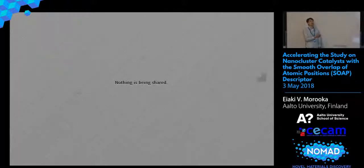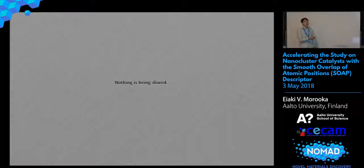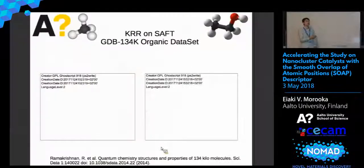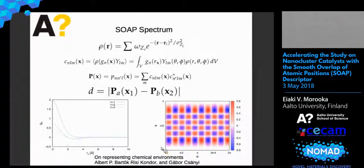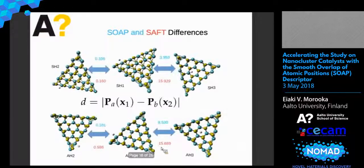We switched to SOAP. It's a very similar procedure. First, we take the Gaussian smearing for each atom. And then we integrate it over the spherical harmonics with a basis function, which could be anything orthonormal. If we take the power spectrum, it is invariant under rotation and permutation. But we keep the atom positions so that we don't make it invariant under translation — it's just so that we can get a local chemical environment. If we take two power spectrums and take the difference, we can get a distance measure between them.